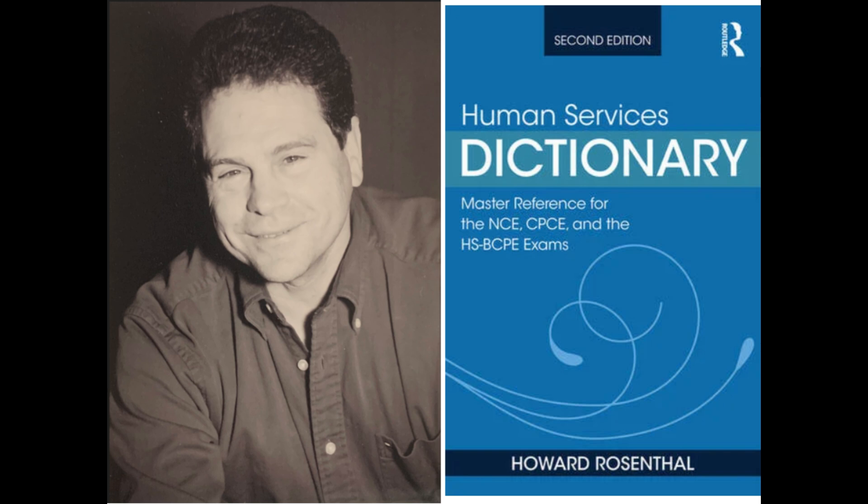In Ellis' ABC theory, A stands for activating event, B for the belief system, and C for the emotional consequence of the client. A lowercase r denotes a correlation coefficient.